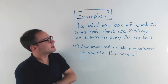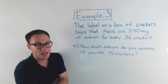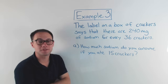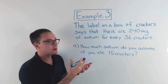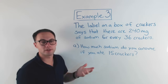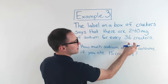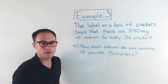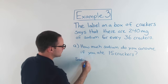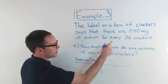Here's our last example — example three. The label on a box of crackers says that there are 240 milligrams of sodium — that's just salt — for every 36 crackers. How much sodium do you consume if you ate 15 crackers? If you remember the last example, we used ratio tables, so let's do the same thing here. Our ratio is 240 milligrams to 36 crackers.